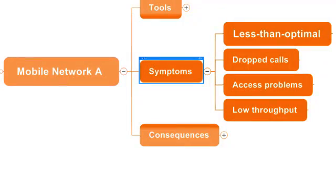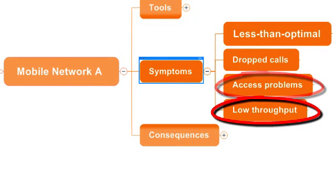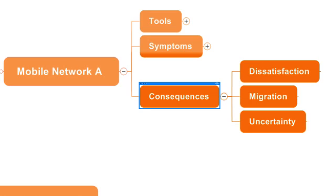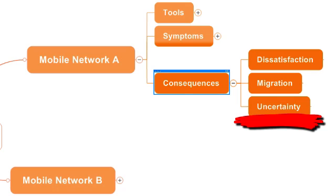If the network is not properly optimized, then it performs poorly and the first symptoms start to appear. Their customers typically experience a higher than normal percentage of dropped calls, inability to access the network, and low throughput. The consequences for the mobile company are dire, as it experiences growing customer dissatisfaction and customers start to migrate to other, more reliable networks. Ultimately, the company faces an uncertain future and a potentially ruined reputation.